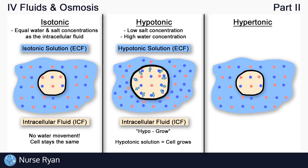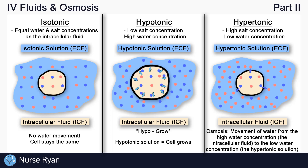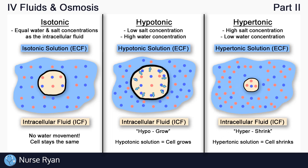Finally, we have the hypertonic solution. Hyper means above or more, so there is a higher salt concentration in a hypertonic solution. If we add a lot of salt, the solution becomes hypertonic, and now it's the inside of the cell that has the higher water concentration. Water moves from high to low water concentration, so water will rush out of the cell, causing the cell to shrink or shrivel in an attempt to even out the water concentration. So hypertonic solutions cause the cells to shrink.